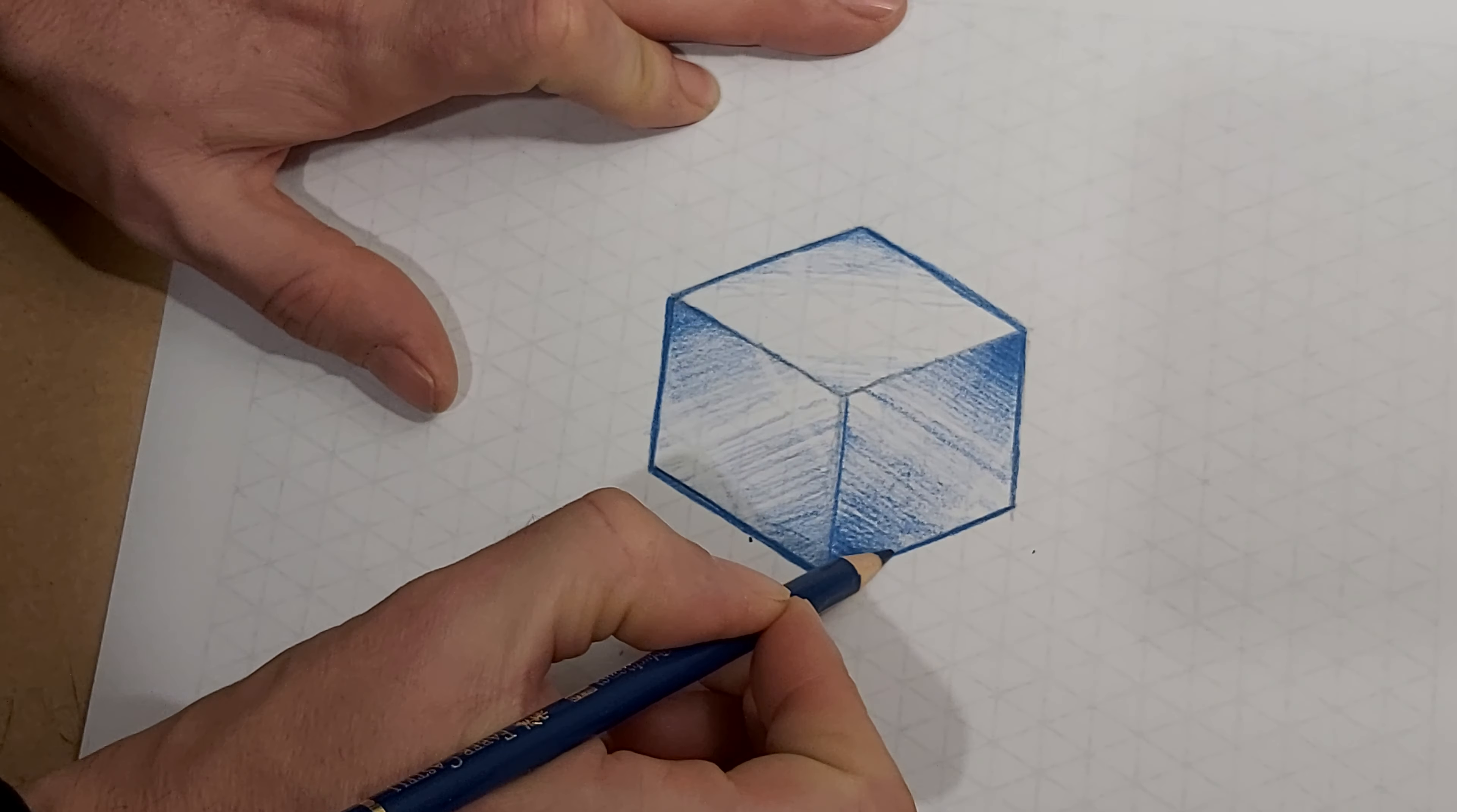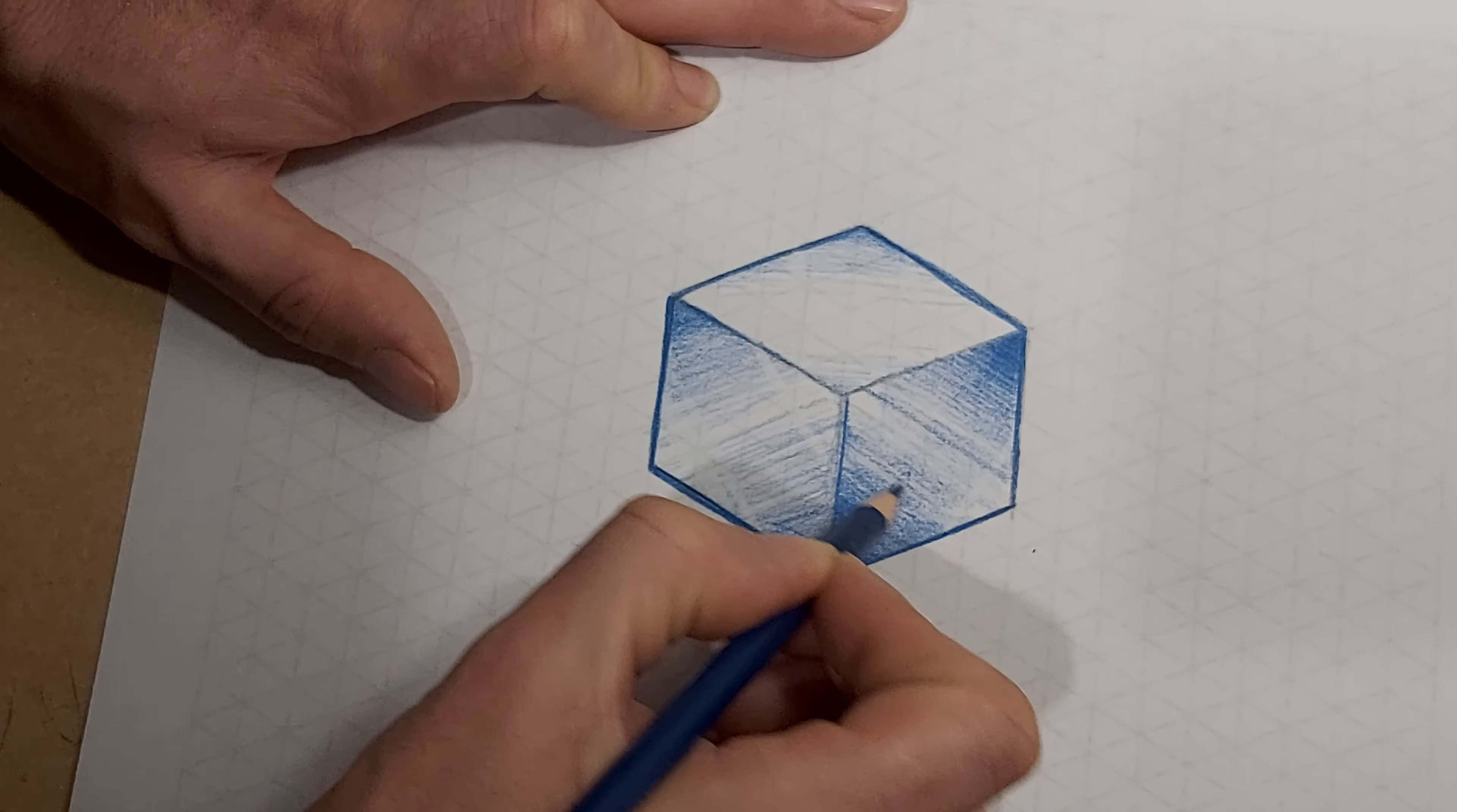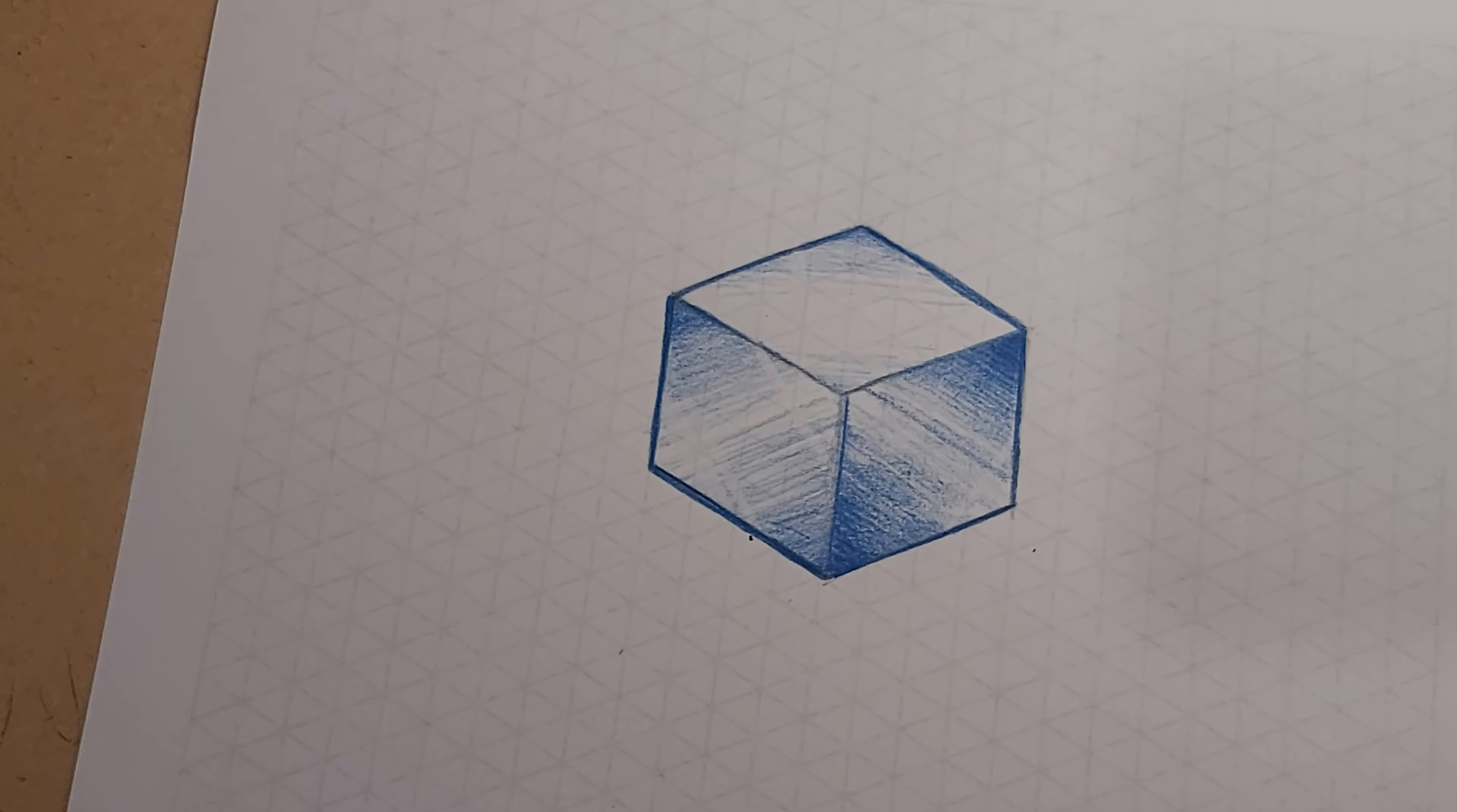Make sure there's no little white patches here. There you go—blue plastic cube in isometric.